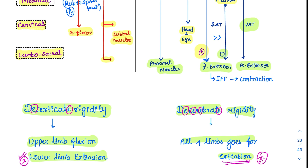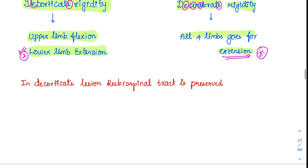Just remember that simple mnemonic to address all questions on decorticate and decerebrate rigidity. But if the question asks which is the most important tract differentiating decorticate from decerebrate rigidity: in decorticate rigidity, the rubrospinal tract is preserved. That is the major difference between these two conditions.